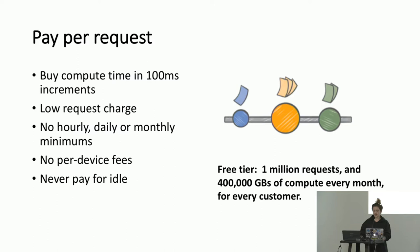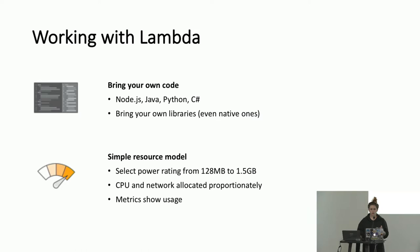Working with Lambda — number one: bring your own code. You write your own function. You can use Node.js, Java, Python, or C#. You can also bring your own libraries. There are some things included in the runtime that you can use to run those functions. Some of the SDKs are already there for you, so you don't have to worry about bringing them.